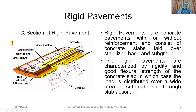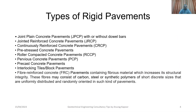This rigid pavement may or may not consist of reinforcement. As you can see, there are transverse joints and longitudinal joints. When reinforcement is put in as per the design process, it consists of dowel bars and tie bars. Dowel bars are used perpendicular to the transverse joints, and tie bars are used to connect the two blocks of the rigid pavement. The surface is finished as per the desired design requirements.